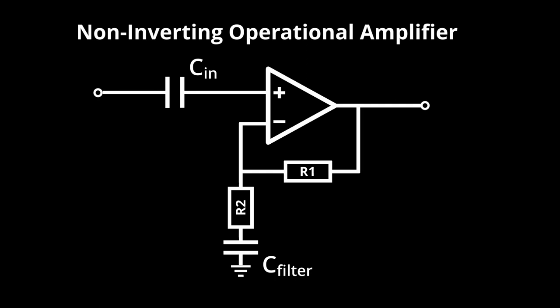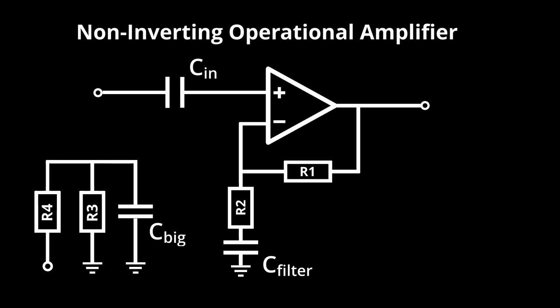To actually introduce the DC bias, we add a voltage divider composed of two resistors. This voltage divider is also connected to ground with a large capacitor, in order to filter out any noise or inconsistent voltage coming from the power supply.